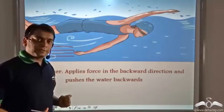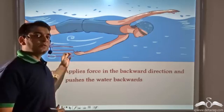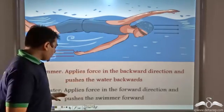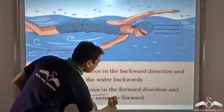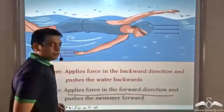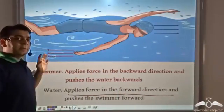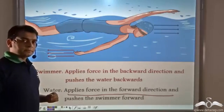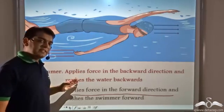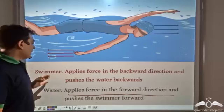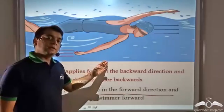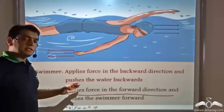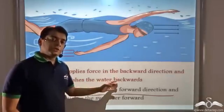You would be surprised to know that it is the water which is pushing the swimmer forward. The water applies the force in the forward direction on the swimmer, and because of this force, the swimmer is moving forward. So, the swimmer exerts a backward push on the water, and the water exerts a forward push on the swimmer.